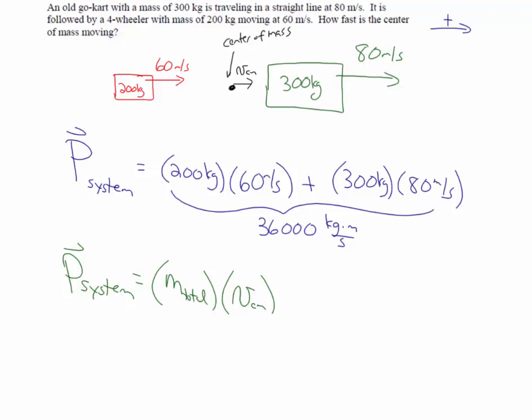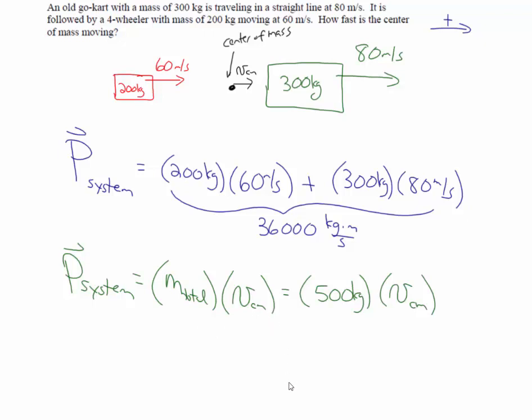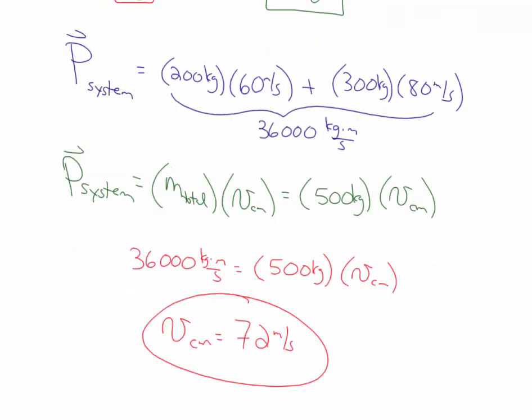The total mass of the system is 200 kilograms plus 300 kilograms, or 500 kilograms, times the velocity of the center of mass. Setting the two expressions for total momentum equal: 36,000 kilogram meters per second equals 500 kilograms times the velocity of the center of mass. So the velocity of the center of mass must be 72 meters per second.